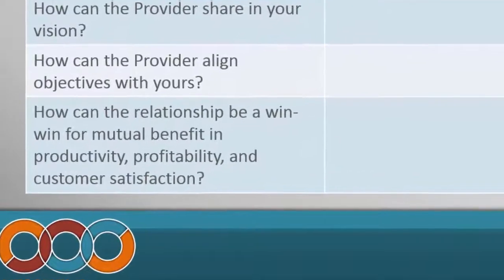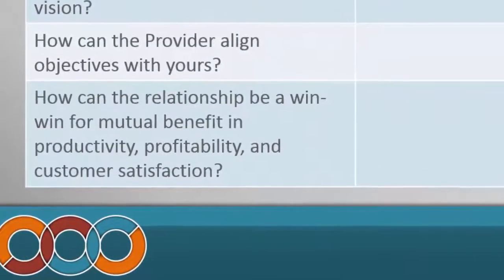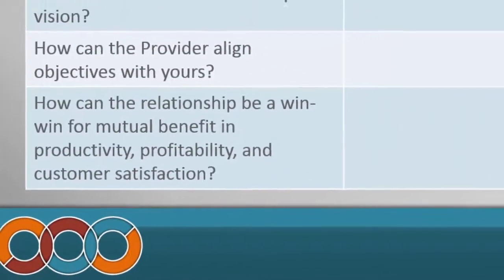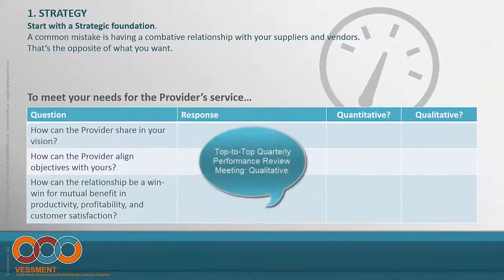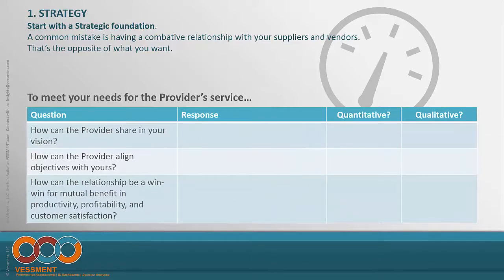How can the relationship become a win-win for mutual benefit? Common responses here include setting up top-level meetings between your leadership and the provider's — perhaps a quarterly review meeting — so you can come together and have a meeting of the minds. Another might be sharing operational reports that are outside of the vendor's performance metrics but things you want them to know about your business so they can ultimately be a good partner.